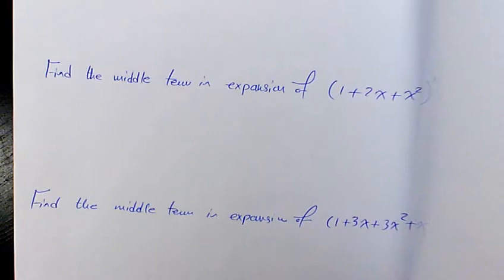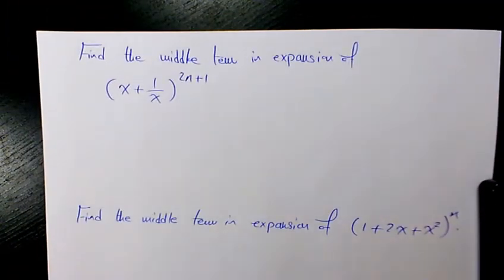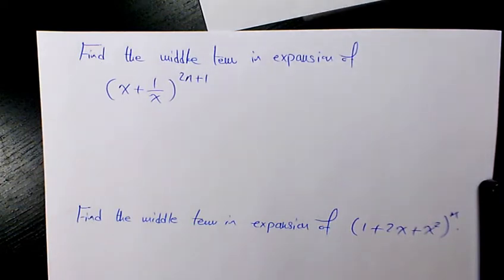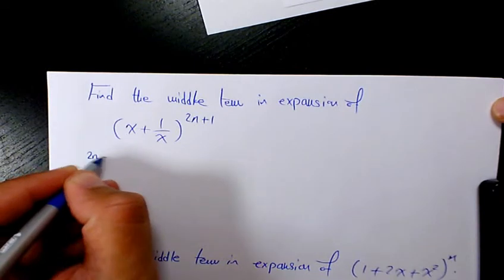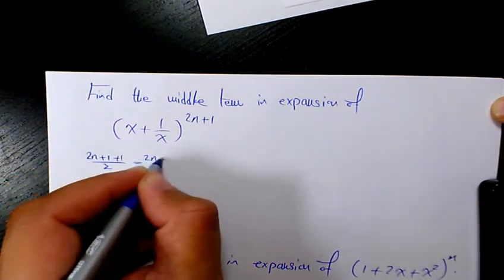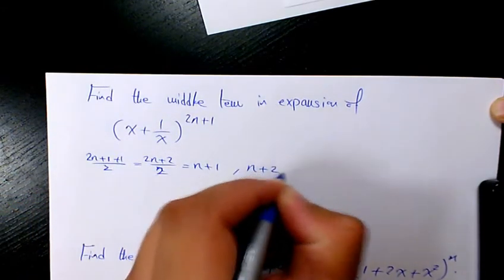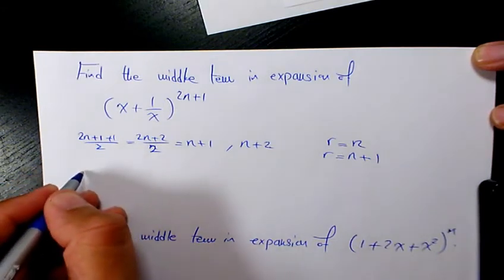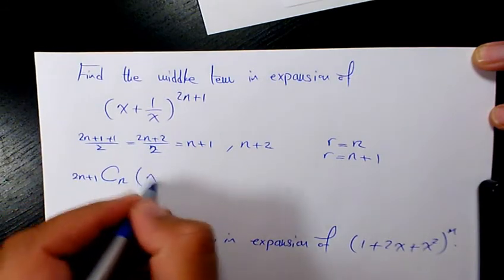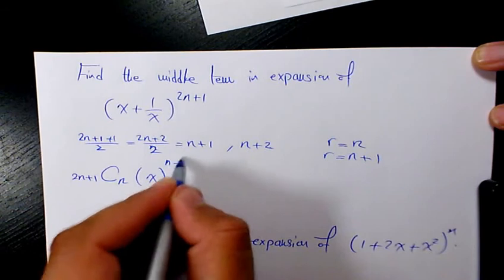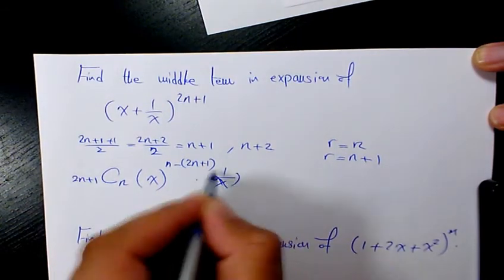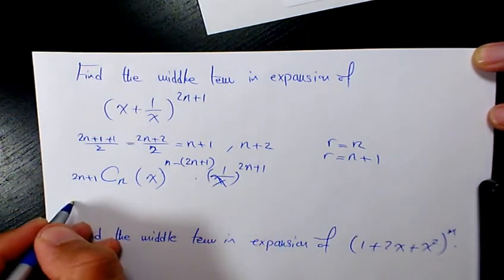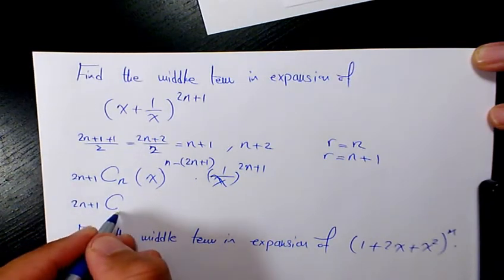Next, find the middle terms in the expansion of (x + 1/x) to the power of (2n+1). Since 2n+1 is an odd number, the number of terms is even (2n+2), so we have two middle terms. These are the (n+1)th and (n+2)th terms, found by (2n+1+1)/2 = n+1 and n+2. So r = n and r = n+1. The first term is (2n+1)Cn · x^(2n+1−n) · (1/x)^n.